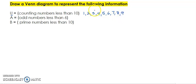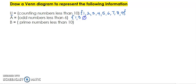We would not include 10 because 10 is not less than 10. So let us look at what are the members for odd numbers less than 6. The odd numbers less than 6 are 1, 3, and 5.